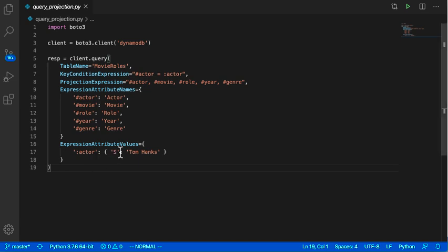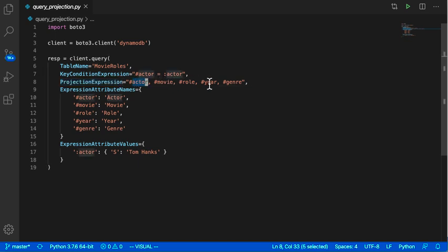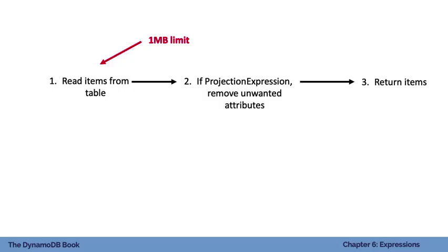Looking at the code, we still have our key condition expression matching on actor, but we add a projection expression specifying which attributes to return — actor, movie, role, year, genre — omitting the cover image to avoid bloating the response. The same caveats from filter expressions apply: the projection expression is not applied until after items are already read from the table, after hitting the one megabyte limit and being charged for all those reads.